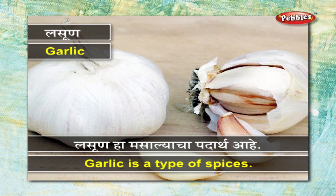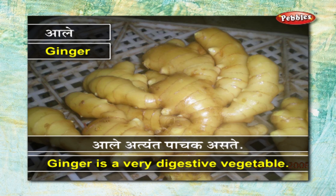लसून - लसून हा मसाल्याचा पदार्थ आहे. आले - आले अत्यंत पाचक असते.